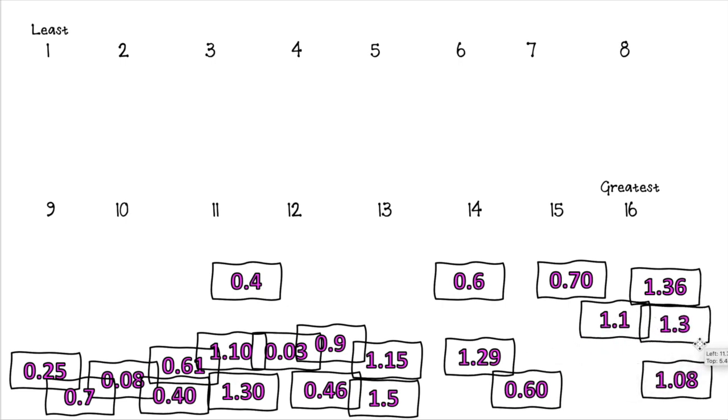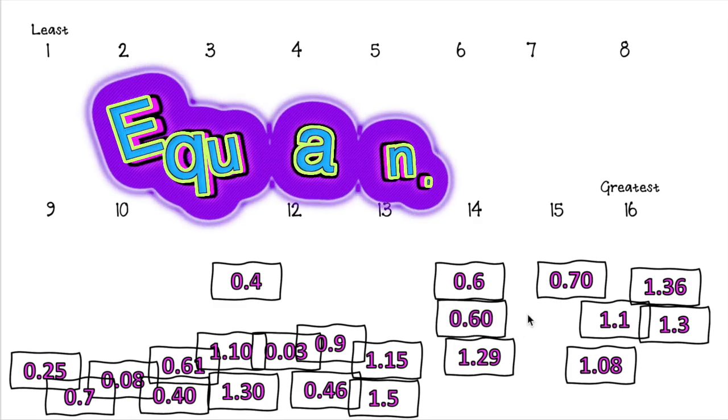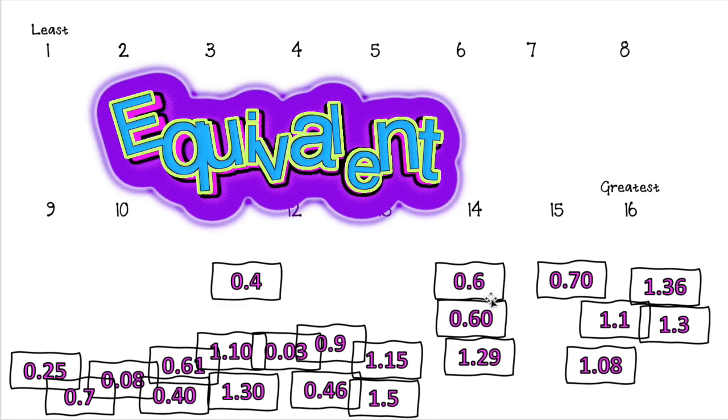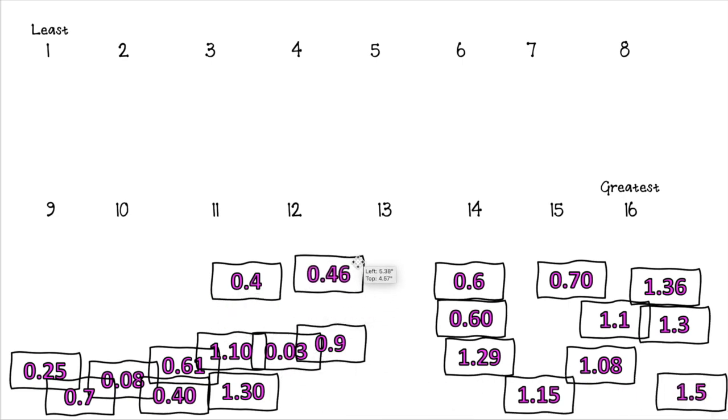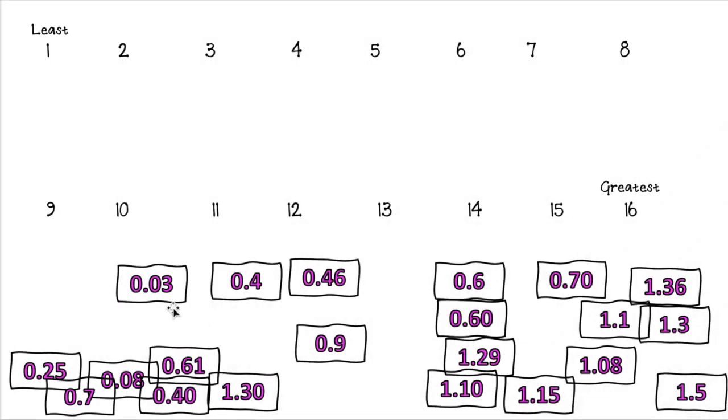1.30. Look, I found some that are equivalent. I have 6 tenths and if you remember, this is equivalent to 60 hundredths. These are one whole, so that's a large number. 0.46, which is larger than 0.4, because this would be 40 hundredths.